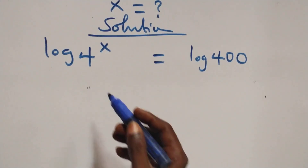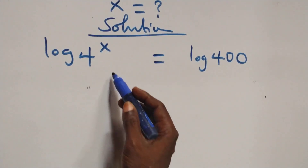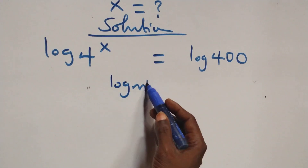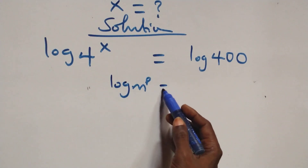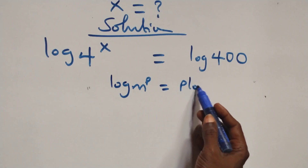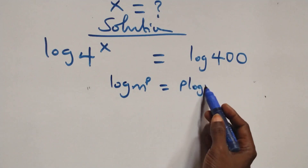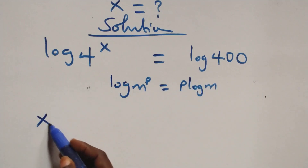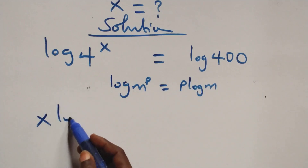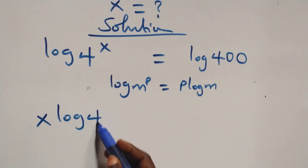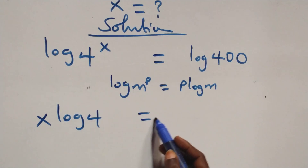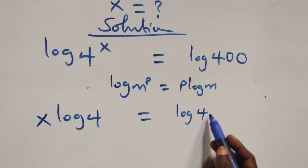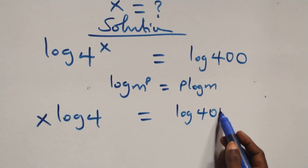The next step here, we apply the power law of logarithm, where we have log m raised to power p, which is the same thing as p log m. So what we have here becomes x log 4 equals to log 400 on this side.